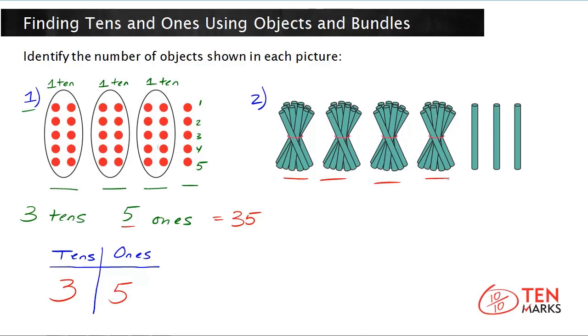And I'm going to count how many rods are in each bundle. It's going to be a little hard to see, but try and follow along. There is one, two, three, four, five, six, seven, eight, nine, ten. There are ten rods in each bundle, which means each bundle represents one ten.